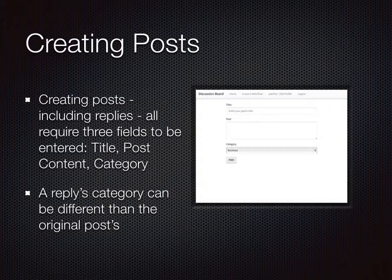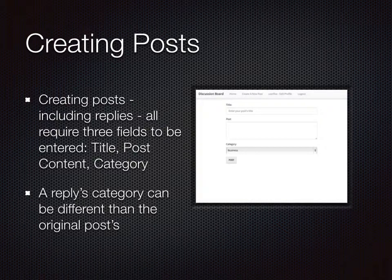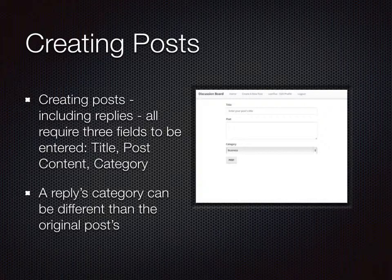One thing that most people are going to want to do once they're logged into the site is be able to create content. Creating posts, whether it's a reply or a new post, is all done from the same page. However, if you select a reply button, it does tag it to the thread of the existing post, whereas if you click 'Create a New Post,' it starts as a whole brand new thread. Creating content requires you to fill in three fields: the title of the post, whatever content you wish to post, and then a category selection. If you're replying to something, the reply's category can be different than the original post's.